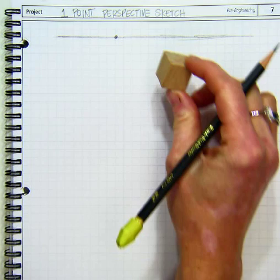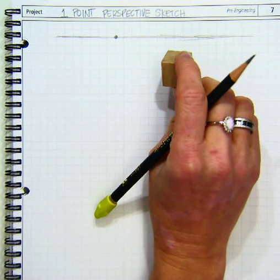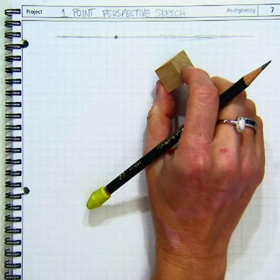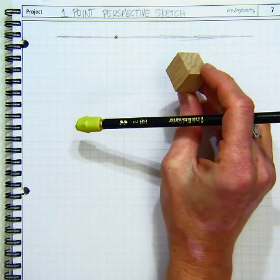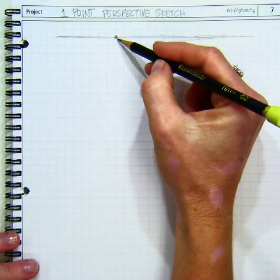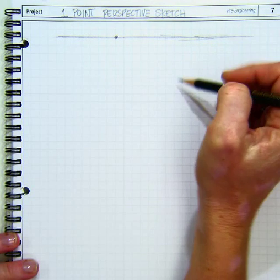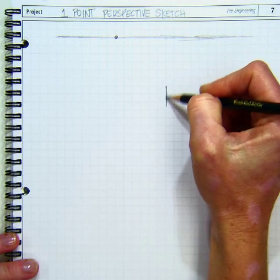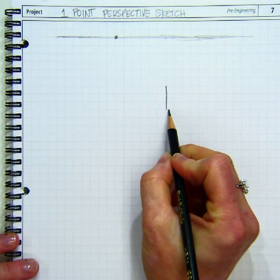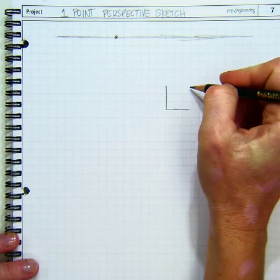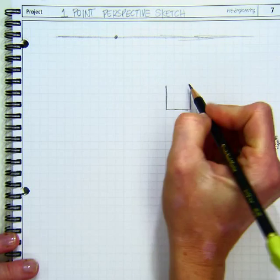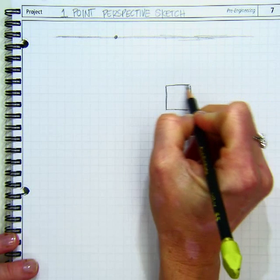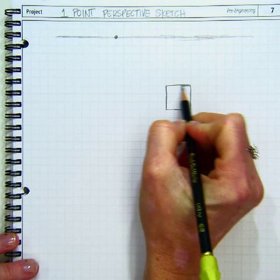We're going to try to draw just this basic one little wooden block or a cube. So off to the side from my vanishing point, I'm going to start by drawing the front face of my cube. And it is a cube, so I'm making it 3 by 3. You can make it 2 by 2. I find that 3 by 3 is a nice size.